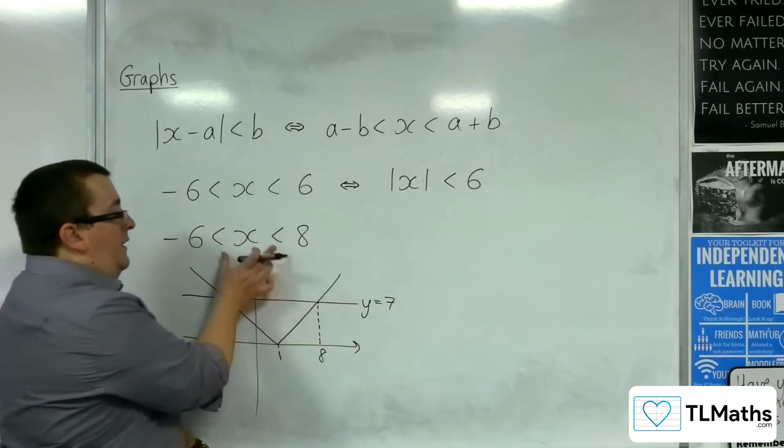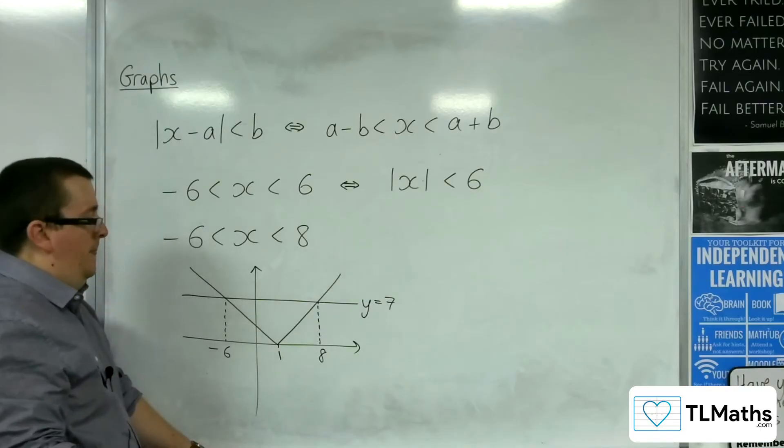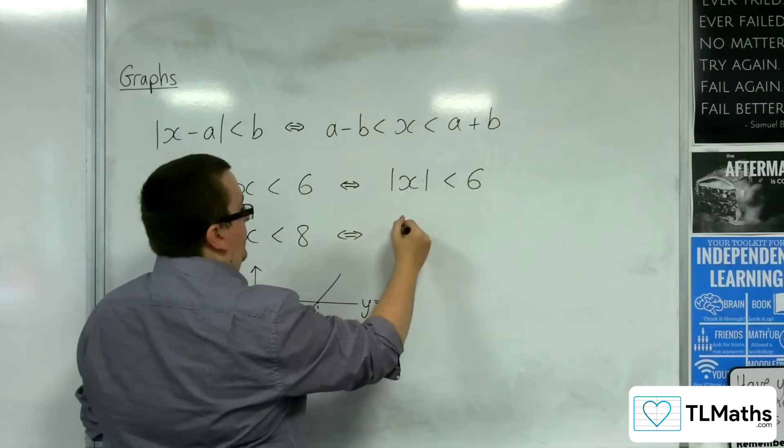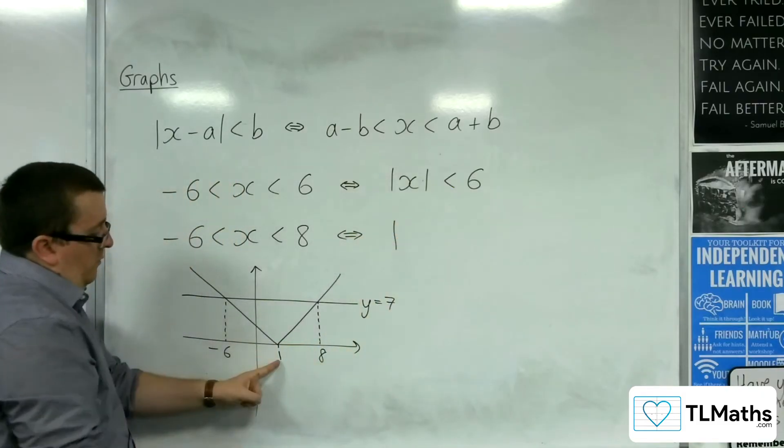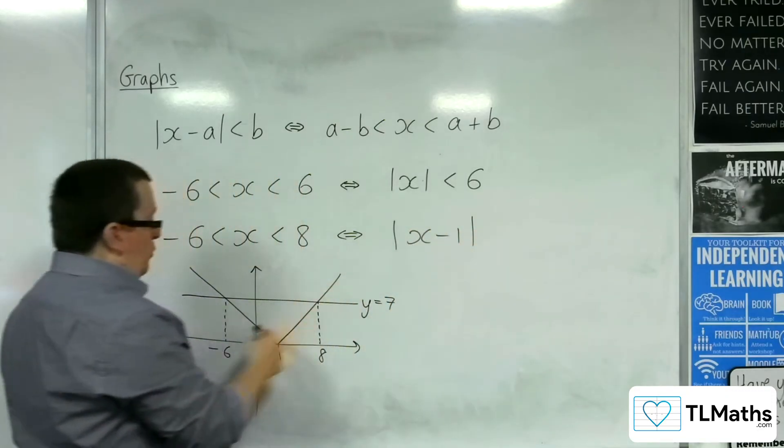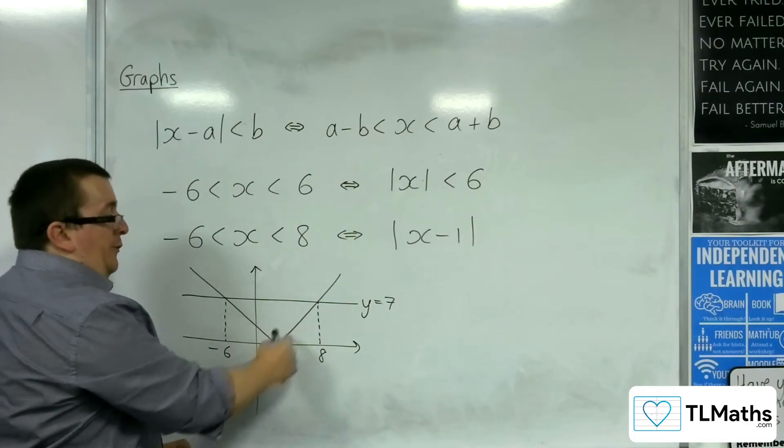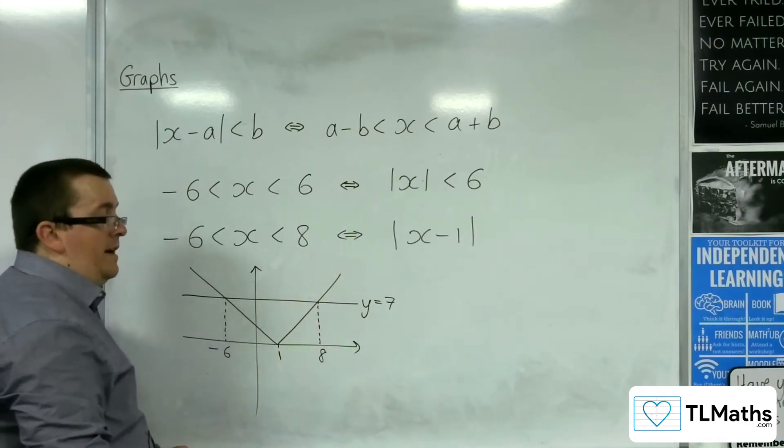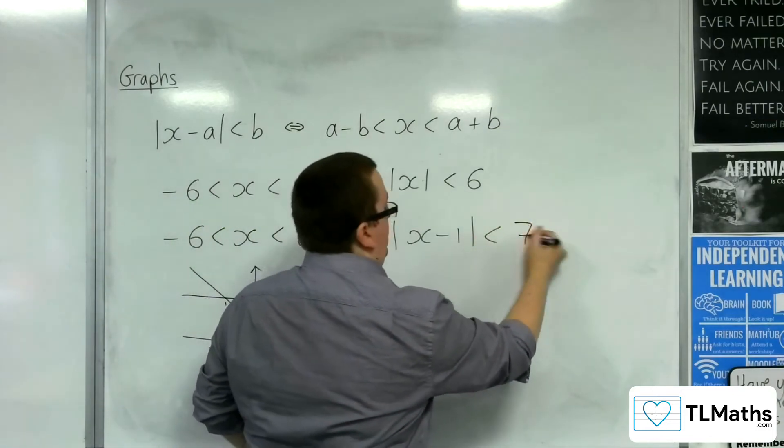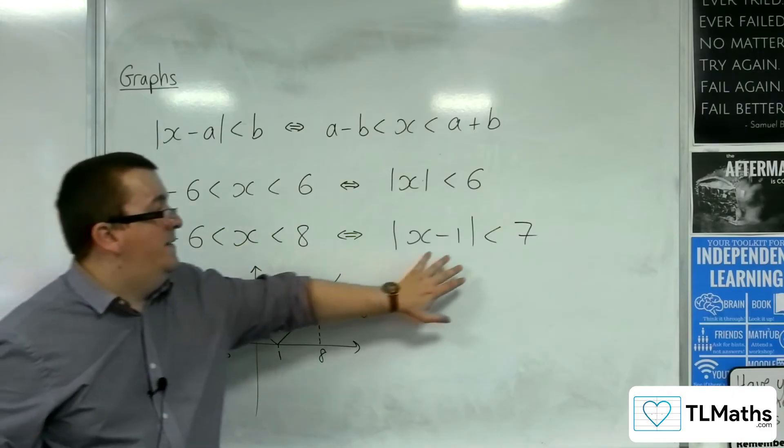So if I was writing this as a modulus inequality, then I could write it in this form of, well, if that's 1, then that means it's x minus 1. So this is y equals x minus 1 modded, because I've used the fact that the gradient of that line is 1, and that would be less than 7. And so this can be written in that form.